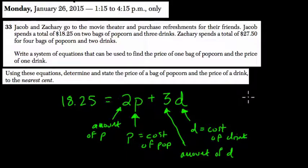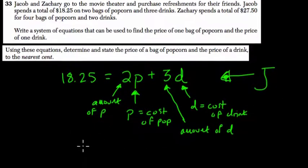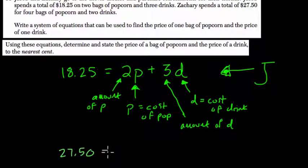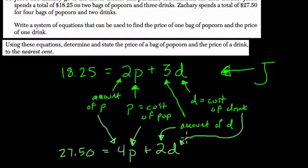So this is for Jacob here. So I'm going to just write J for Jacob. This is Jacob's equation. I'll use a different shade of green. So Zachary, 27.50. And what does he do? Well, he has four bags of popcorn. So P is again the cost of popcorn, and this four is the amount of popcorn, plus two drinks. So two is the amount of drinks, and D is the cost of a drink. And this is not for Jacob, but for Zachary.